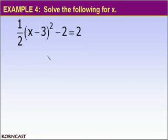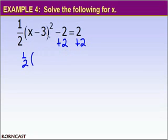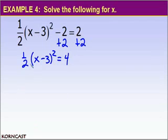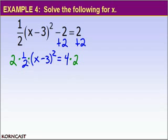Finally, let's solve this equation for x. Again, I'm going to undo the order of operations. I'll add 2 to both sides, leaving one-half times the quantity x minus 3 squared equals 4. Next, I multiply both sides by the reciprocal of one-half, which is 2. Two times one-half is 1, so we get the quantity x minus 3 squared equals 8.